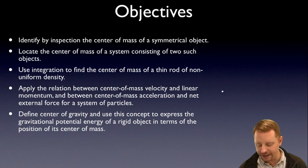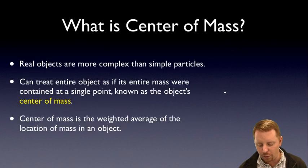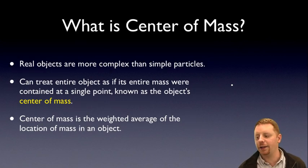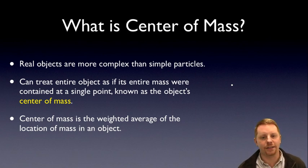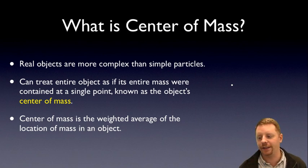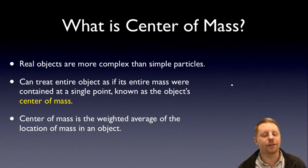Let's dive right in and talk about what is center of mass. Real objects are more complex than simple particles, which is what we've been dealing with so far. But we can treat an entire object as if its entire mass was concentrated at a single point, known as the object's center of mass. The center of mass, mathematically, is the weighted average of the location of mass in an object.